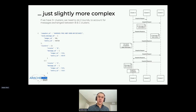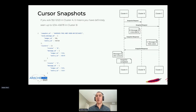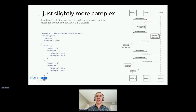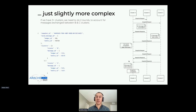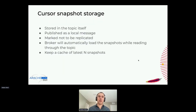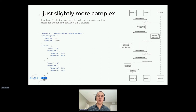With only two clusters, one round trip is sufficient. But with three or more clusters, we need two rounds. The reason is that we want to catch all messages being exchanged between cluster B and cluster C that cluster A has not yet seen. So we do two rounds with three or more clusters, and we take the message ID from the first round for cluster A.